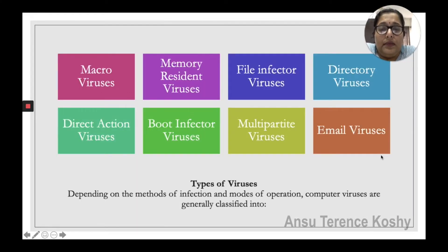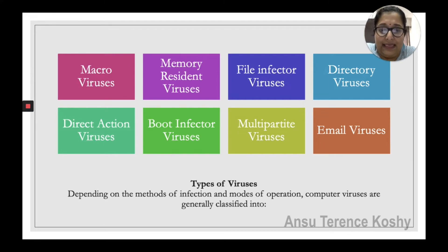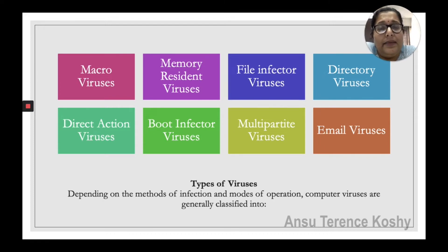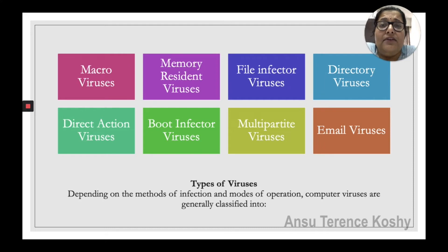Depending on the methods of infection and modes of operation, computer viruses are generally classified into different types. The method of infection refers to how it infects the system, and the mode of operation refers to what it restricts or affects. Based on these two factors, viruses are divided into: macro viruses, memory resident viruses, file infector viruses, directory viruses, direct action viruses, boot infector viruses, multipartite viruses, and email viruses.